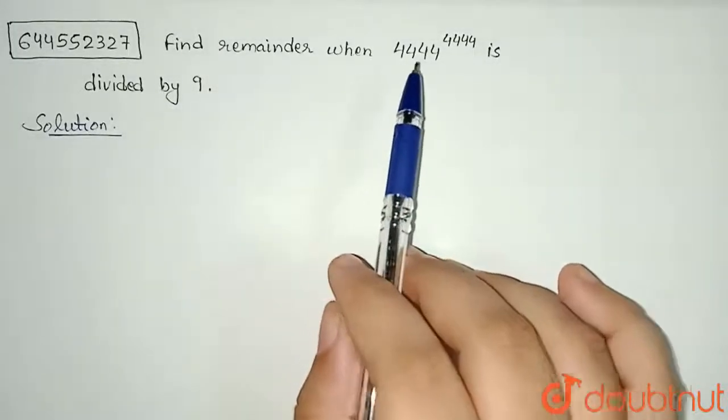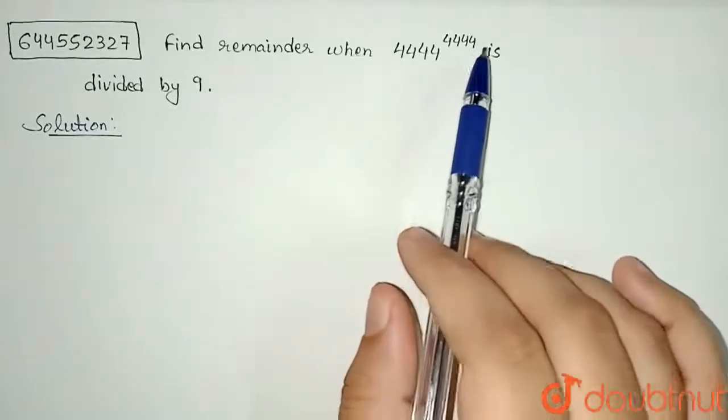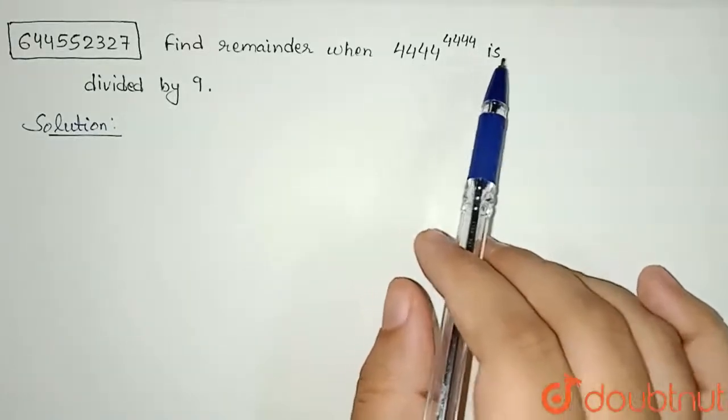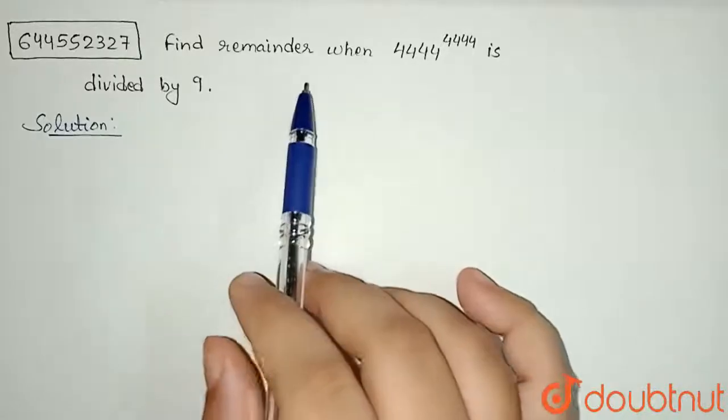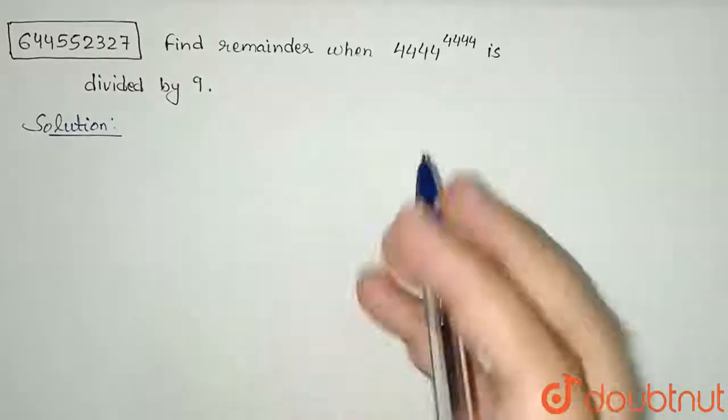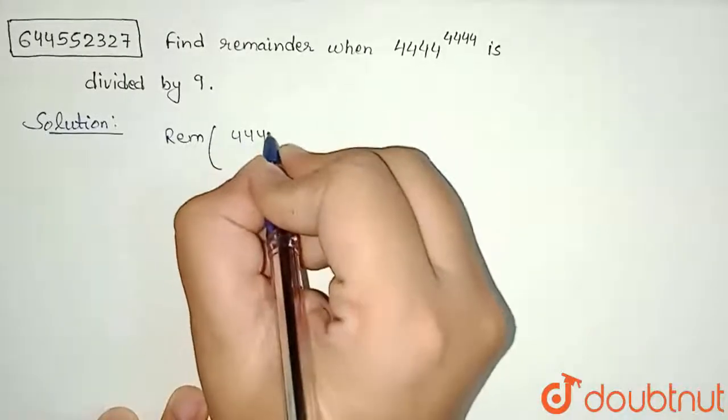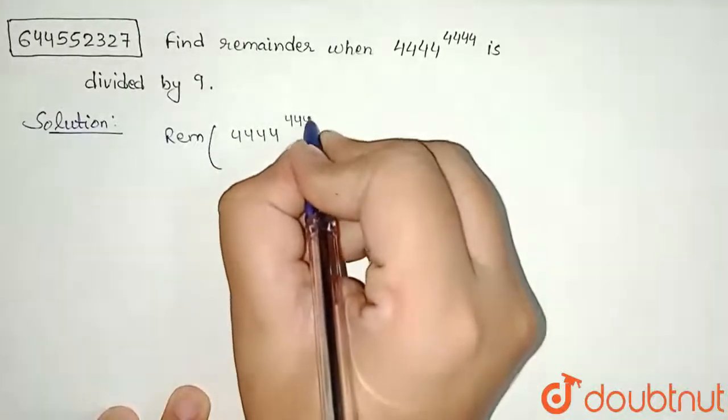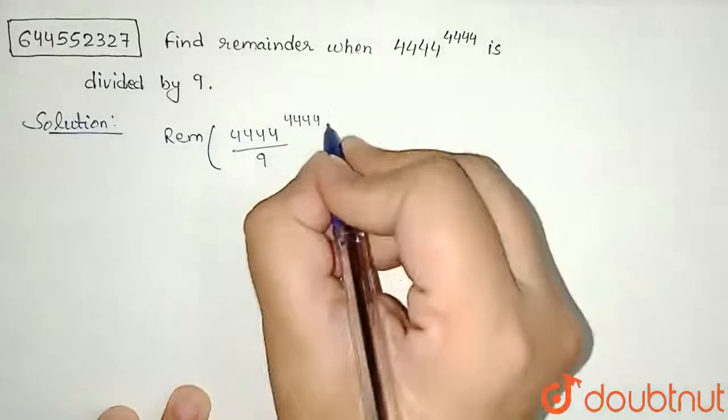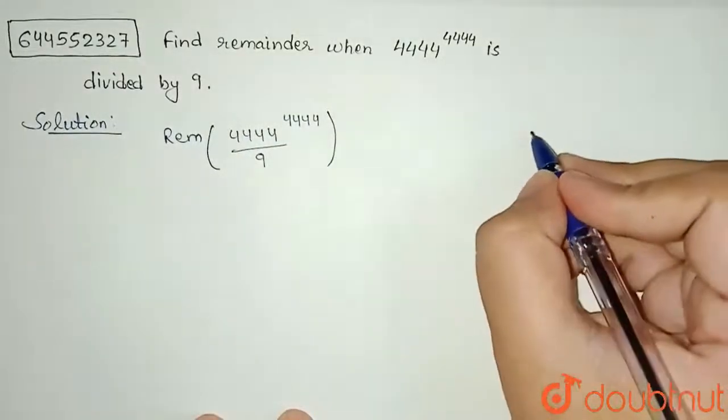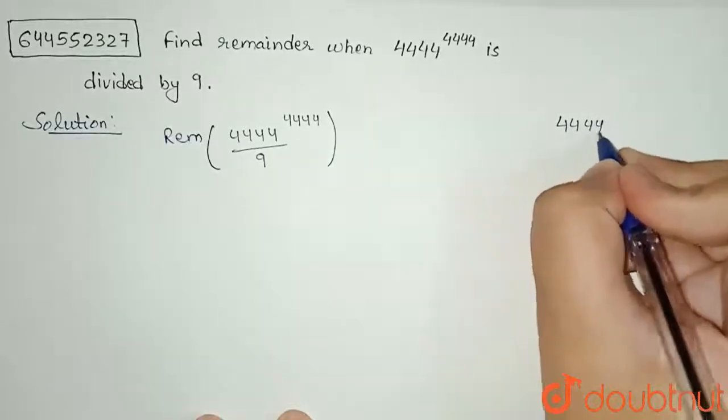remainder when 4444 to the power 4444 is divided by 9. So we need to find the remainder when this number is divided by 9. That means remainder of 4444 to the power 4444 divided by 9. What will be the remainder when 4444 is